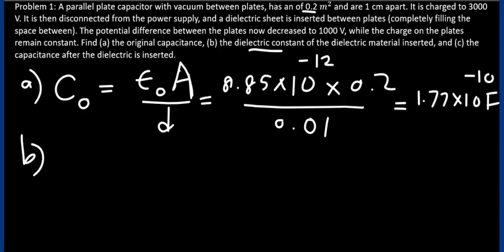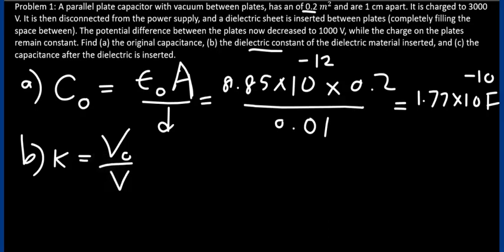Part B: the dielectric constant of the dielectric material inserted. We have seen before that the dielectric constant of the material is quite simply the ratio of the two potential differences — the potential difference when the region between the plates is vacuum, over the potential difference when the dielectric material is inserted. The original potential difference was 3,000.